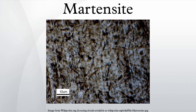Martensite, named after the German metallurgist Adolf Martens, most commonly refers to a very hard form of steel crystalline structure, but it can also refer to any crystal structure that is formed by diffusionless transformation. It includes a class of hard minerals occurring as lath or plate-shaped crystal grains. When viewed in cross-section, the lenticular crystal grains are sometimes incorrectly described as acicular.